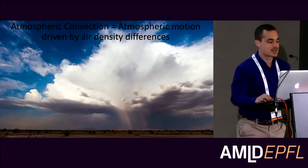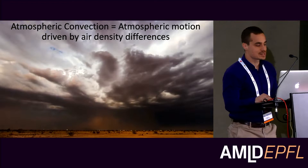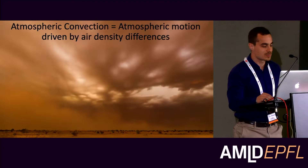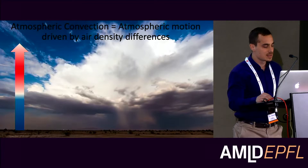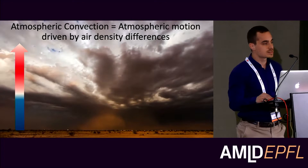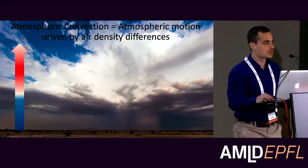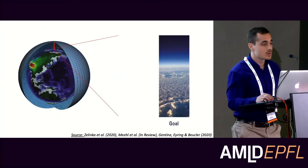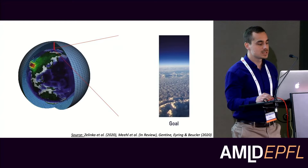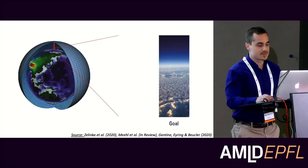Atmospheric convection is broadly defined as any atmospheric motion driven by air density differences, as you can see in this movie of North American monsoon storms. You can immediately see that atmospheric convection transports tracers very fast in the vertical direction — here you're seeing dust, but for climate modeling purposes we really care about temperature and water species. Because of the major importance for vertical transport of energy between the ground, the atmosphere and space, resolving convection in climate models is really important to make robust long-term climate projections.